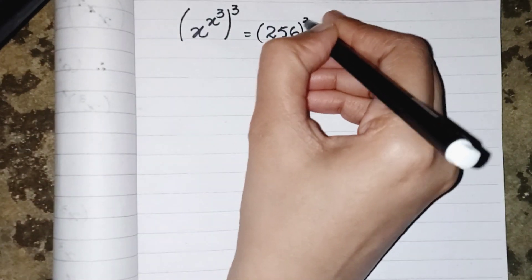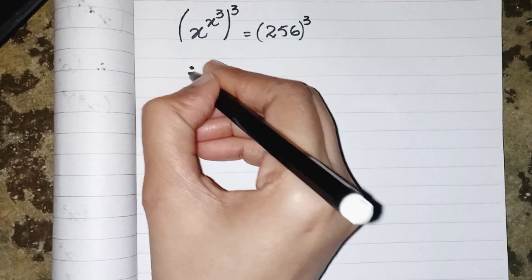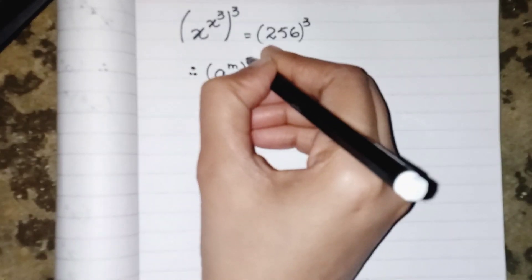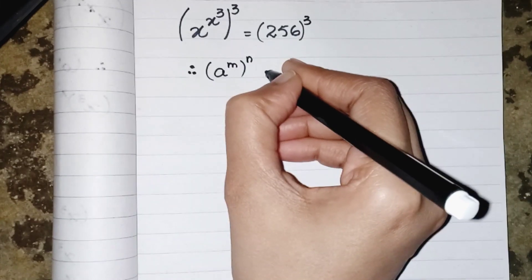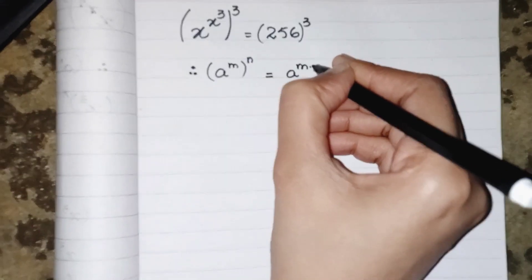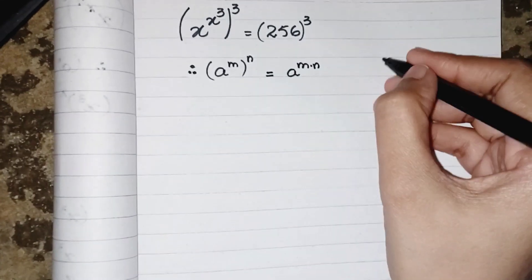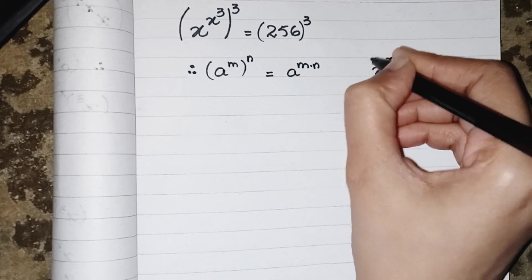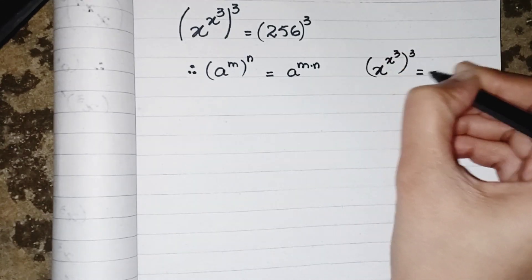We all know that whenever a to the power m and over power is n, it equals a to the power m times n. So we can see that when we have x power x cubed and whole cubed, it will be equals to x power 3 multiplied by x.